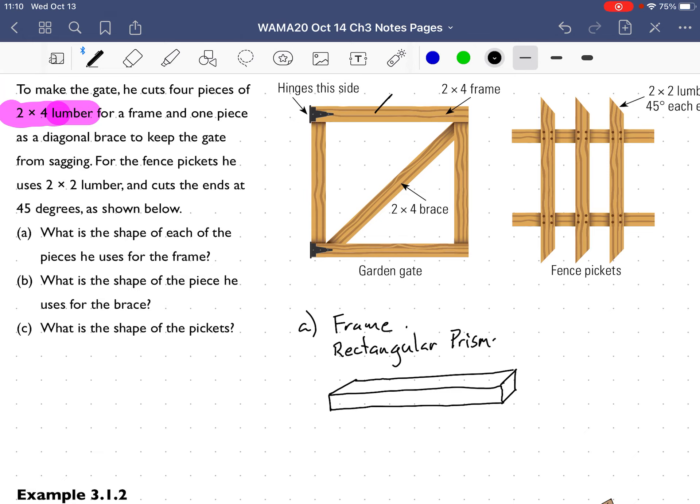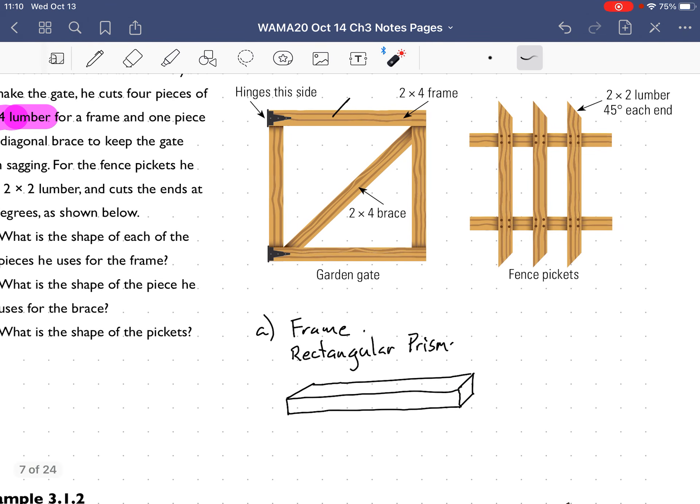There you go, that is the right face for the rectangular prism. A rectangular prism has a rectangle and then it's dragged through the whole prism, it's extruded. For a rectangular prism you can take this end and say it's extruded this way, goes all the way that way.